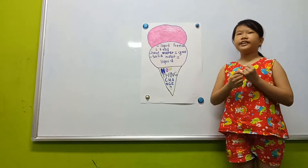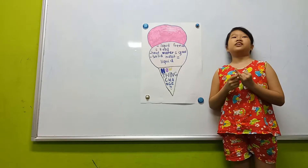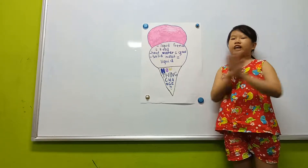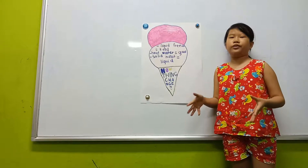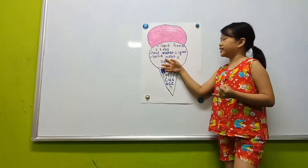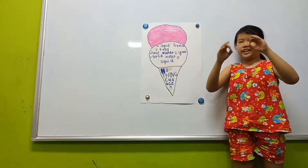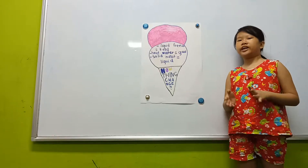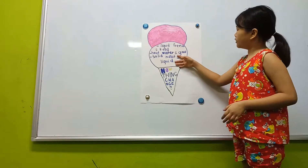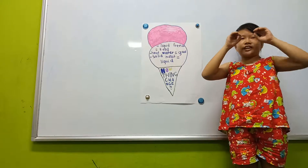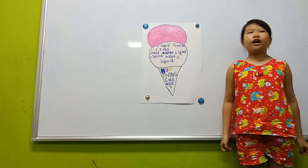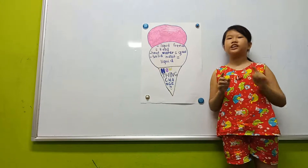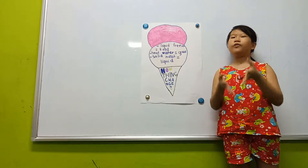Liquid is something we can see, we can touch, but we can't hold. Solid is something we can see, we can touch it, and we can hold. Gas is something we can see, or maybe we can't see, and we can't touch it or hold it.